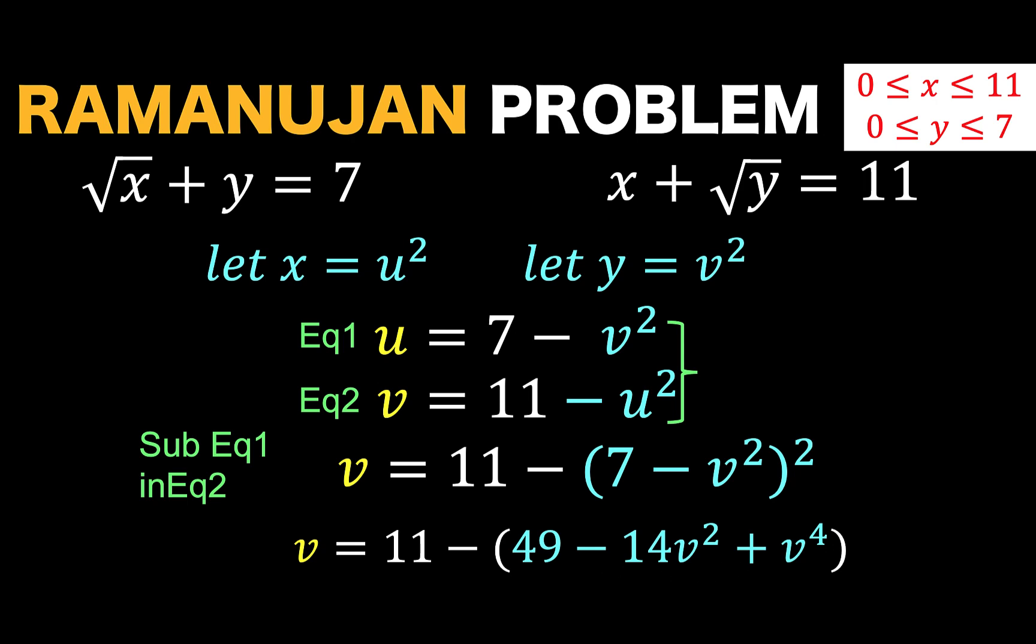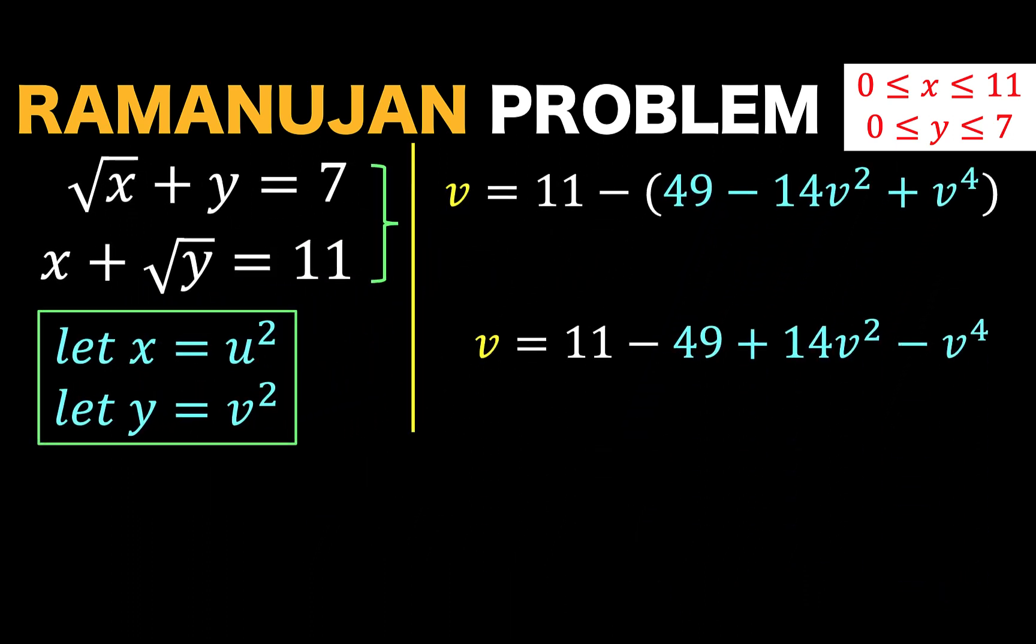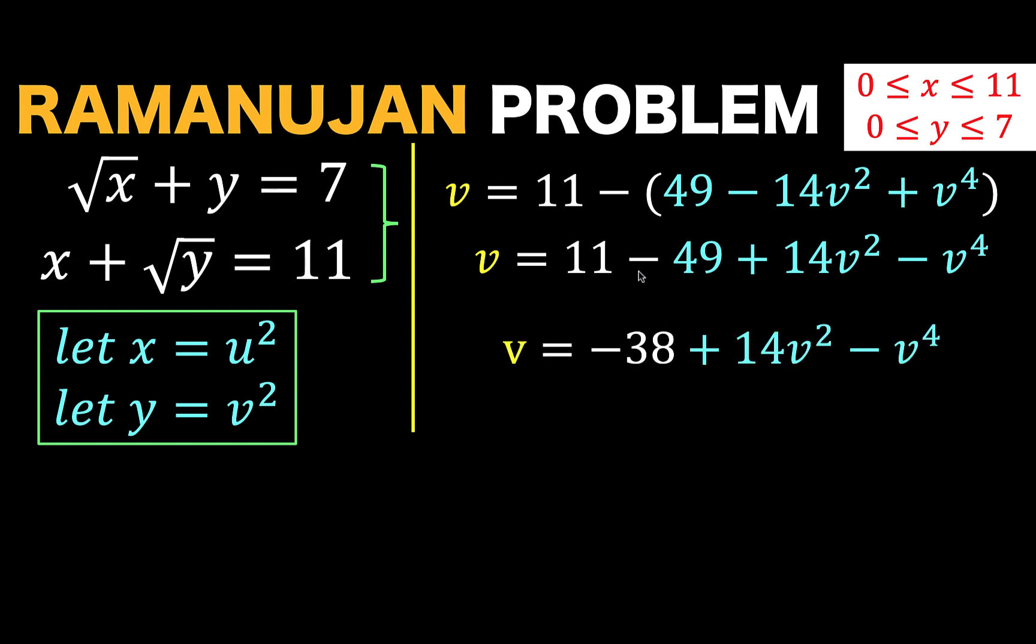And then, let's remove the grouping symbol. So, we now have v equals 11 minus 49. This minus sign becomes positive because we have a negative sign preceding the grouping symbol. The same with this plus sign that becomes minus. Then, 11 minus 49 is negative 38. All the rest are copied. Then, let's gather all the terms to the left side of the equation. So, this minus v to the fourth becomes positive v to the fourth. This plus 14v squared becomes minus 14v squared. v is retained at the left side, so there's no change in the sign. And this minus 38 becomes positive 38 equals 0.